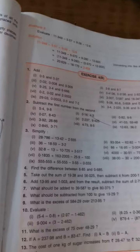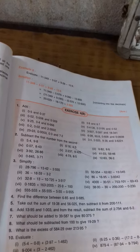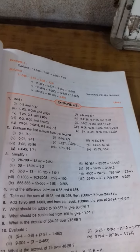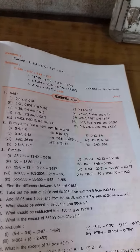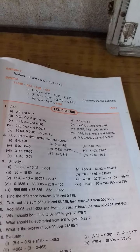Now let's do question number 7. The method is the same, just try to understand the language. What should be added to 39.587 to give 80.375?